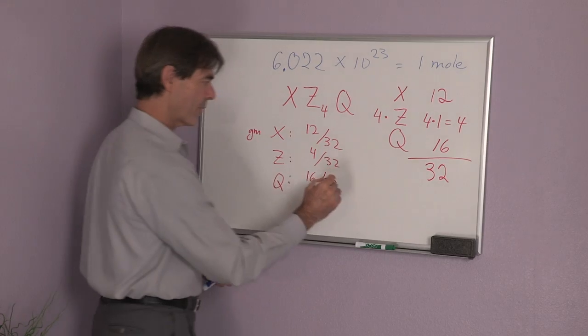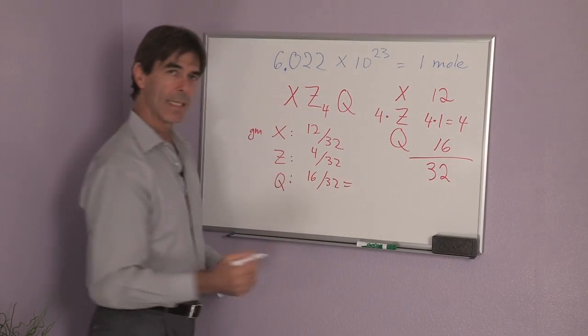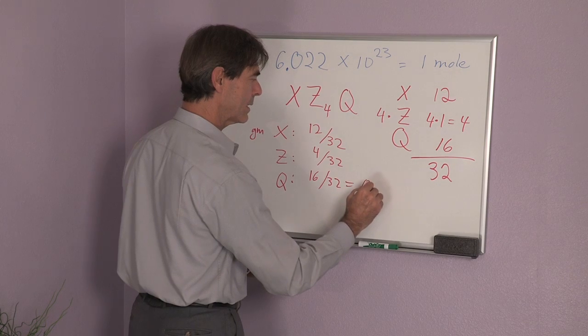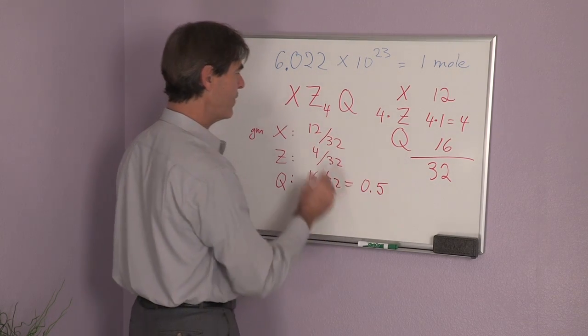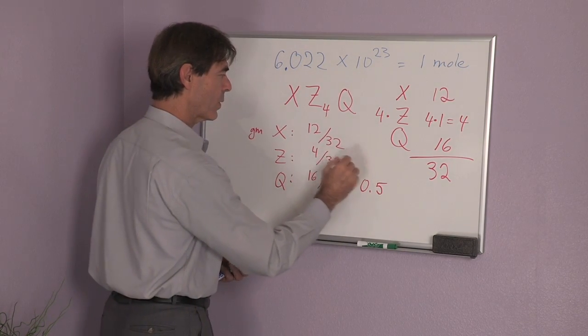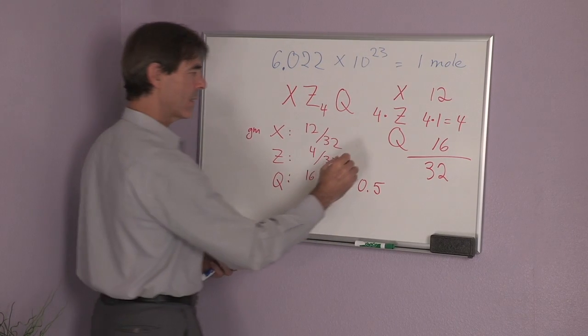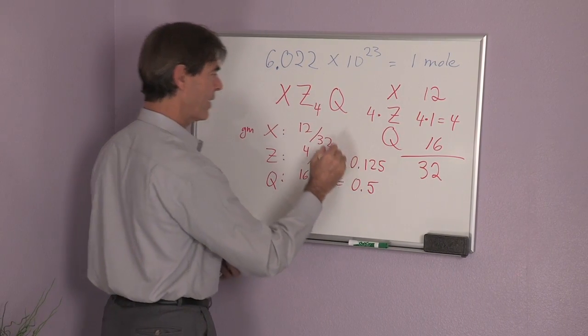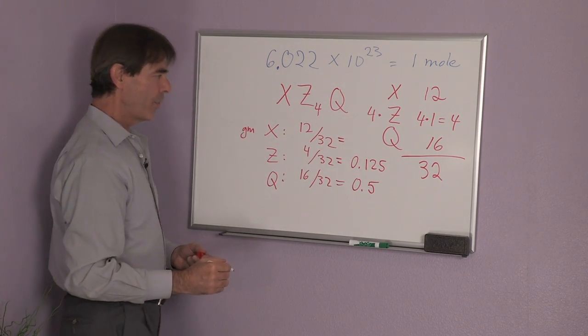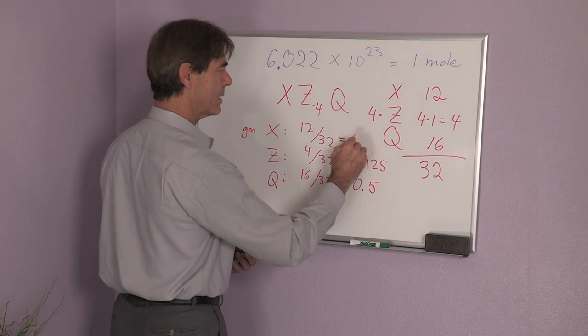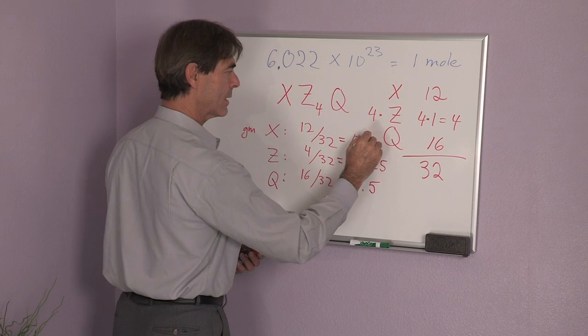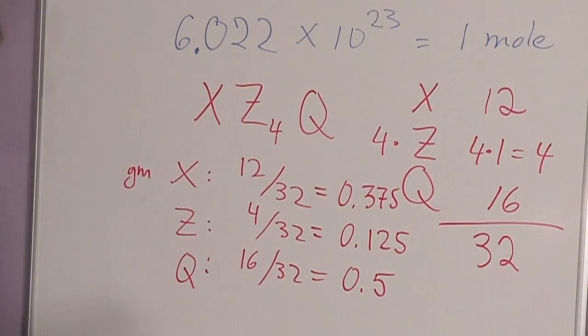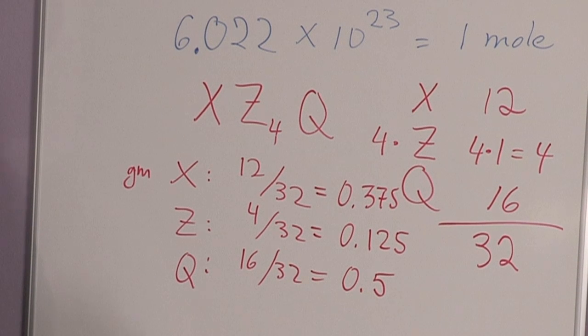And this, of course, you would need to know in percentages or in fractions. 0.5. This is equal to 1/8, 0.125, and this is equal to 3/8, and that is 0.375. These are the mass fractions of each of these components.